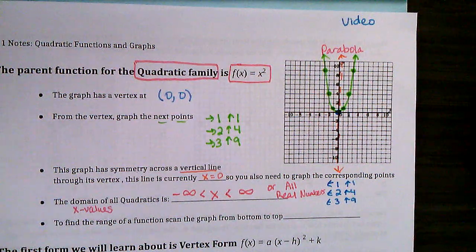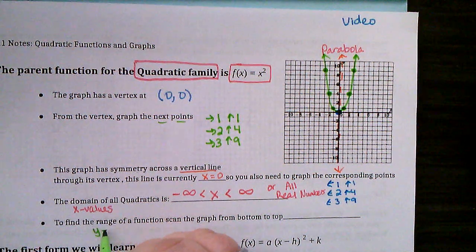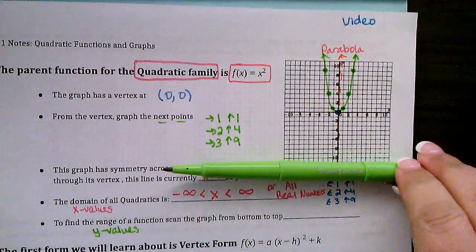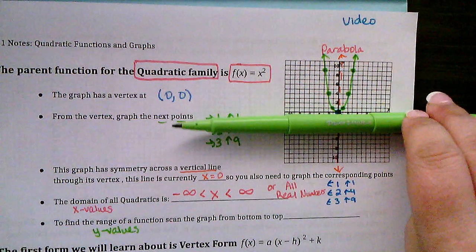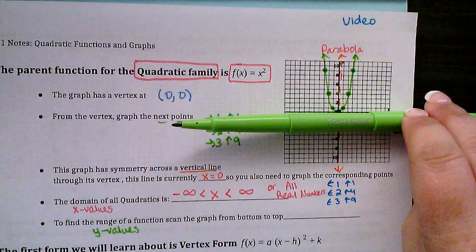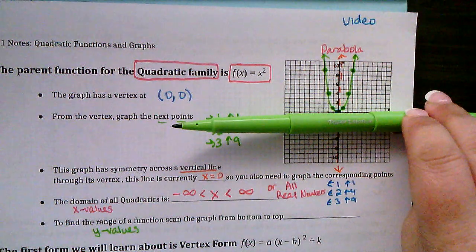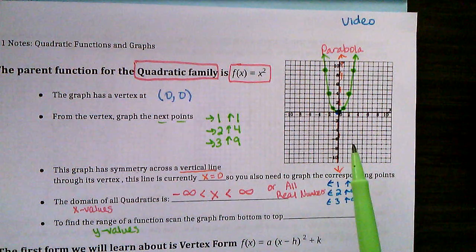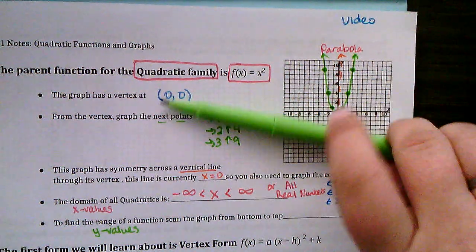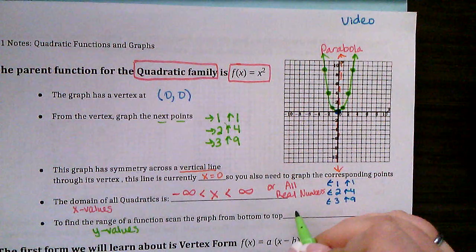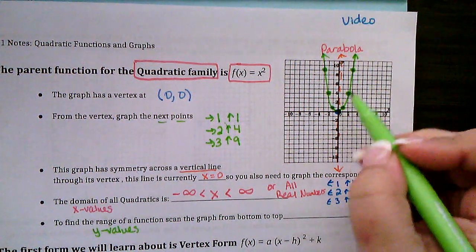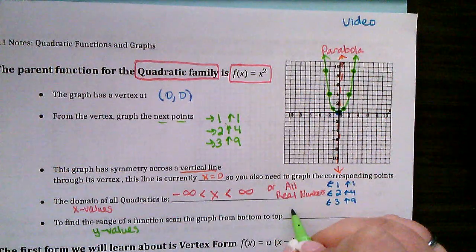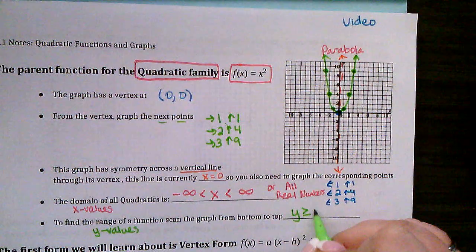You can say the domain is all real numbers. For the range, which is the y values, put your pen sideways and move up. The first thing I hit is 0. This is not going to be all real numbers because none of my graph is below 0 — there's no part of that U down there. I don't hit the U until I get to 0, and then if I keep going I hit arrows. So it's only values above 0: y is greater than or equal to 0.